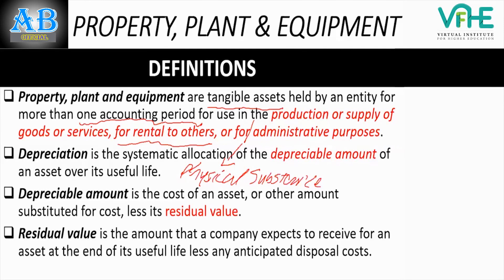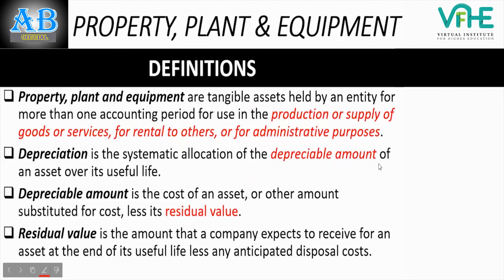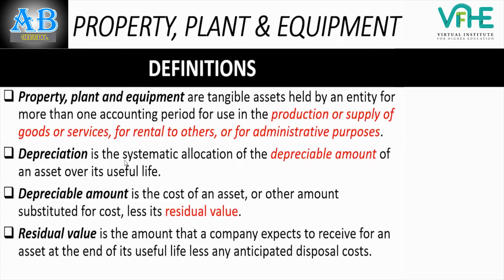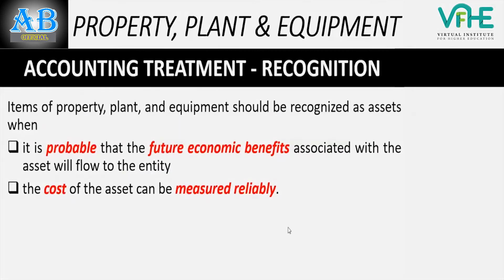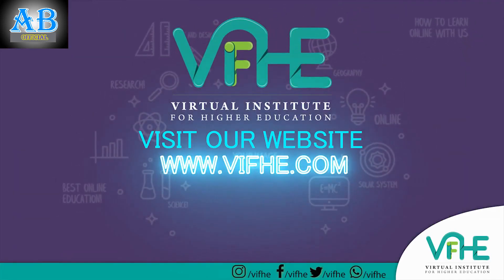The next definition is depreciation. Depreciation is the systematic allocation of the depreciable amount of an asset over its useful life. There are two important terminologies in this definition: 'systematic' and 'allocation.'